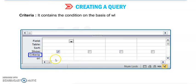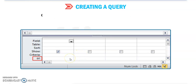Now next is Criteria. In front of Criteria we can set the condition. It contains the condition on the basis of which the records will be filtered in the query output.